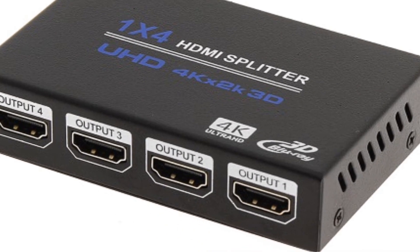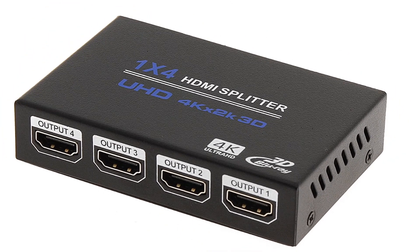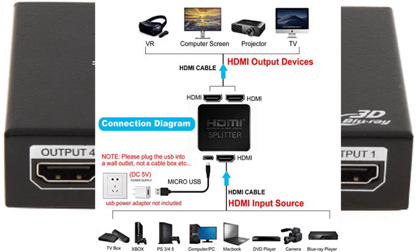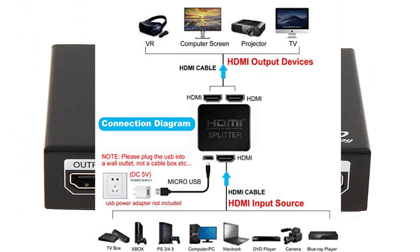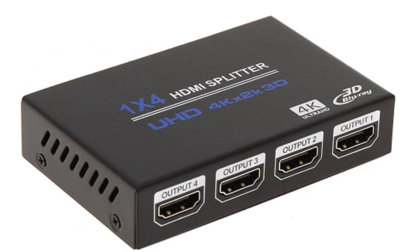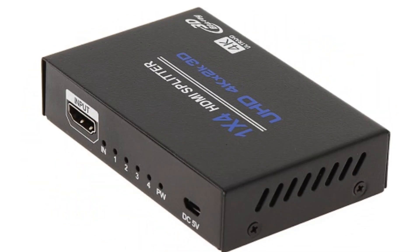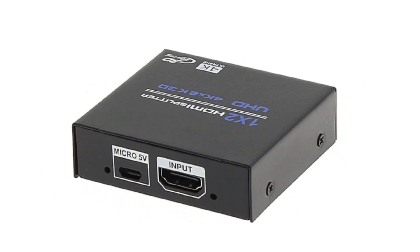The same video and audio content will be displayed on all connected displays simultaneously. This can be useful in situations where you want to display the same content on multiple displays, such as in a home theater or conference room. HDMI splitters come in various configurations, such as 1x2 (1 input, 2 outputs), 1x4 (1 input, 4 outputs), and so on.